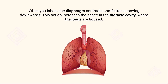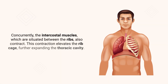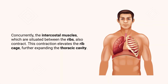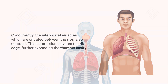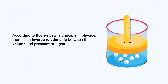When you inhale, the diaphragm contracts and flattens, moving downwards. This action increases the space in the thoracic cavity where the lungs are housed. Concurrently, the intercostal muscles, situated between the ribs, also contract, elevating the rib cage and further expanding the thoracic cavity. The combined effect is a significant increase in the volume of the thoracic cavity.